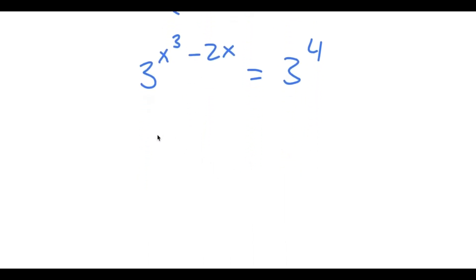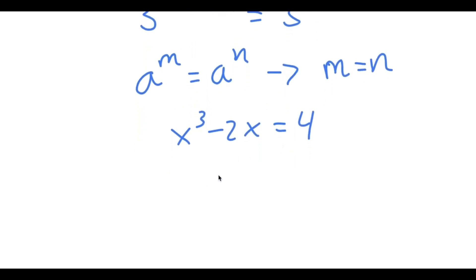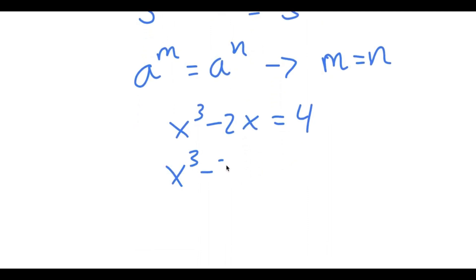This is the same thing as 3 to the power of x cubed minus 2x is equal to 3 to the power of 4. And if I have something in the form a^m equals a^n, then m equals n. So in this case, x cubed minus 2x equals 4, meaning x cubed minus 2x minus 4 is equal to 0.